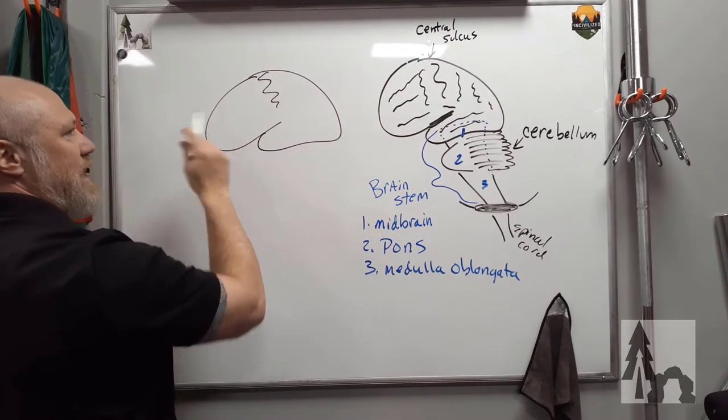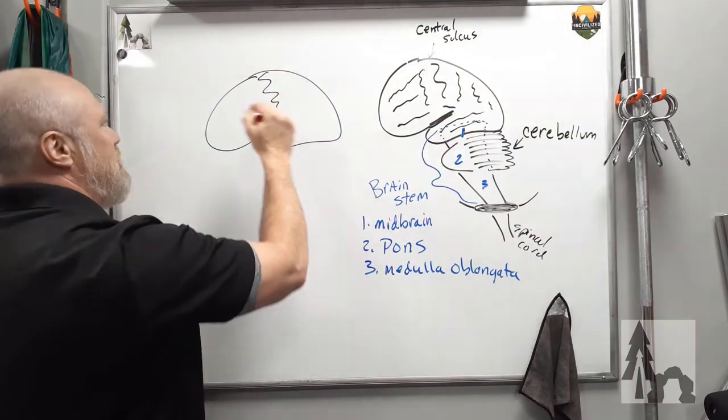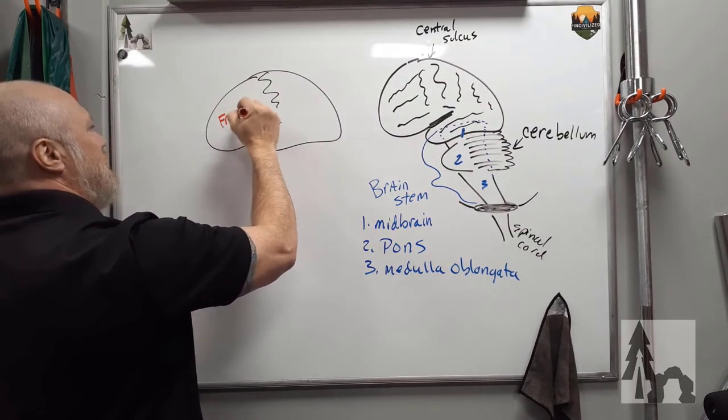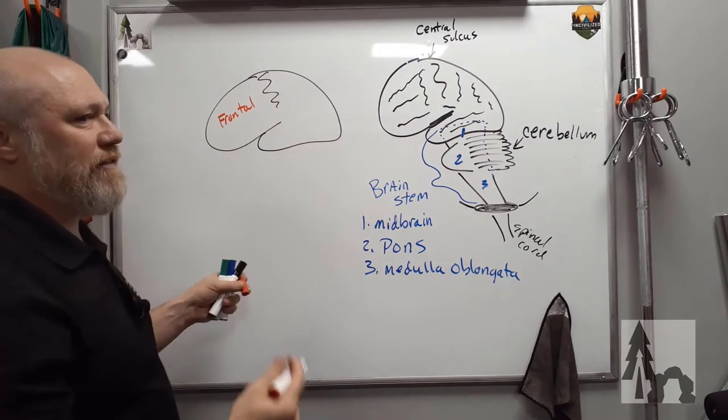Everything anterior to that, that is deep to the frontal bone of your skull, is your frontal lobe. Okay? You have a right and a left frontal lobe.